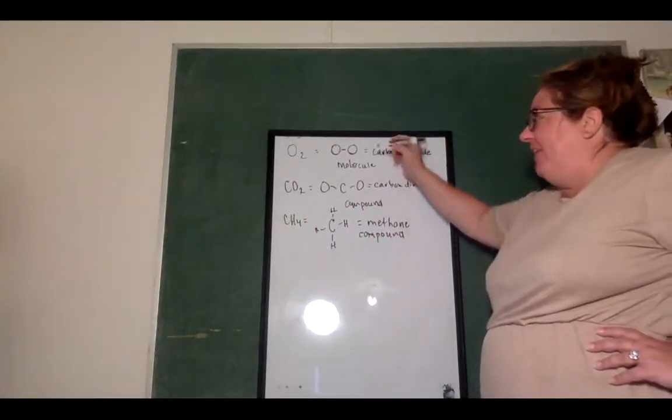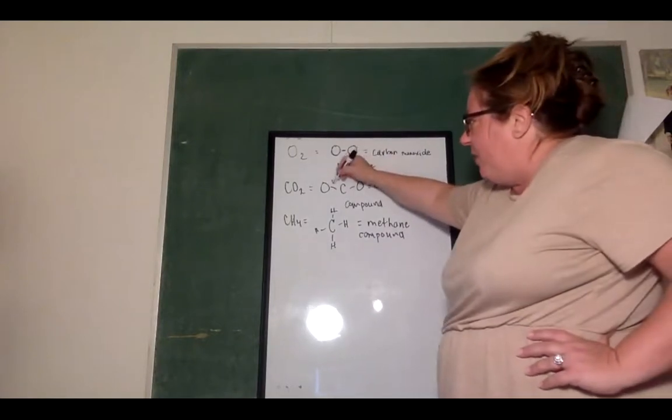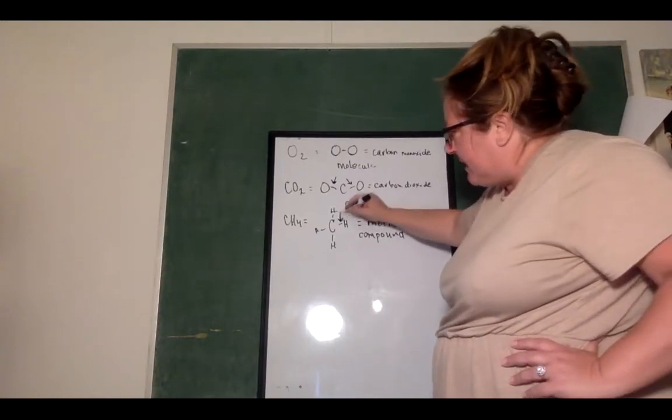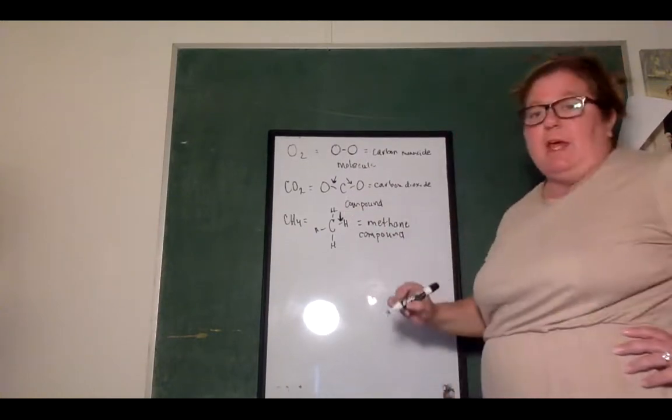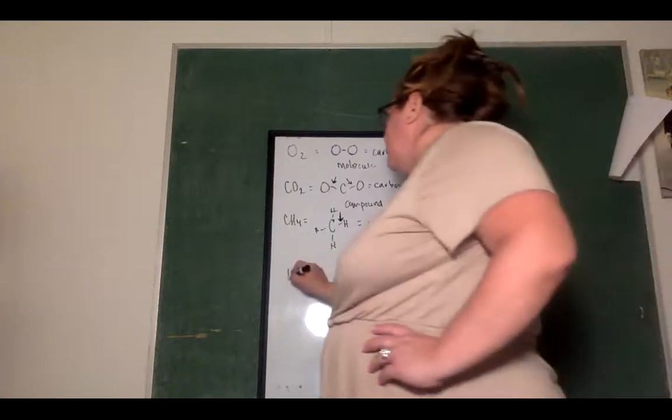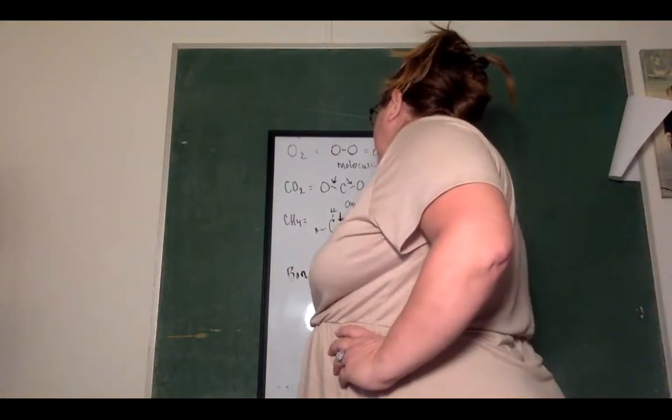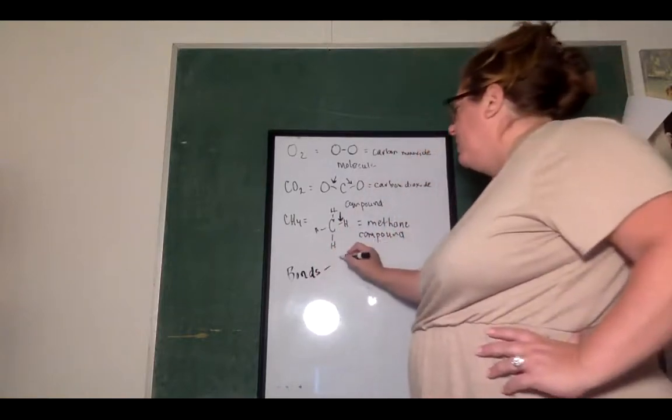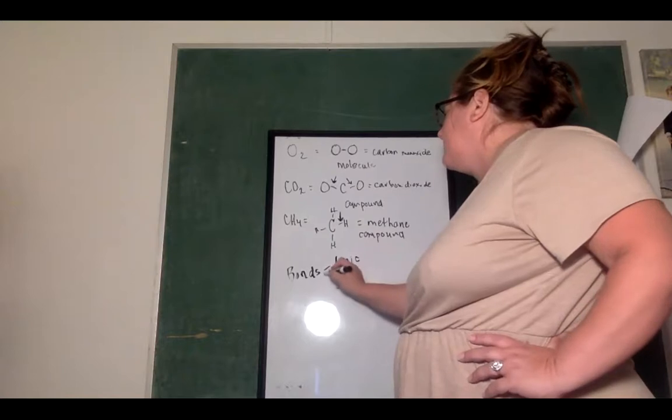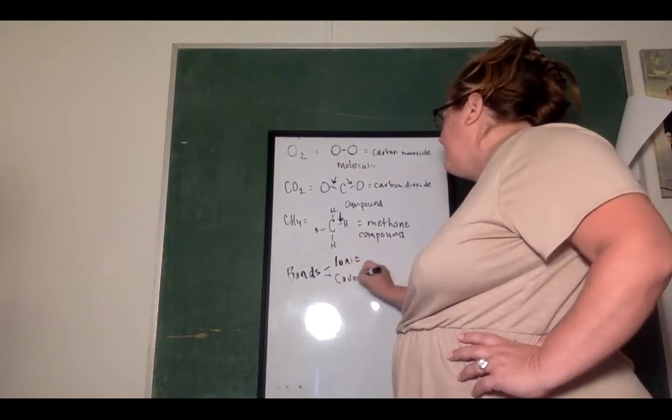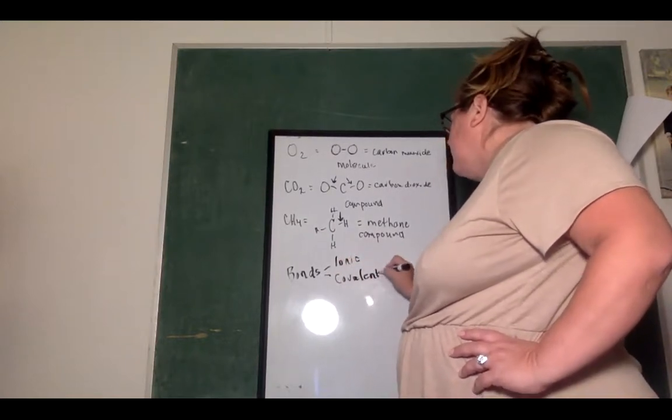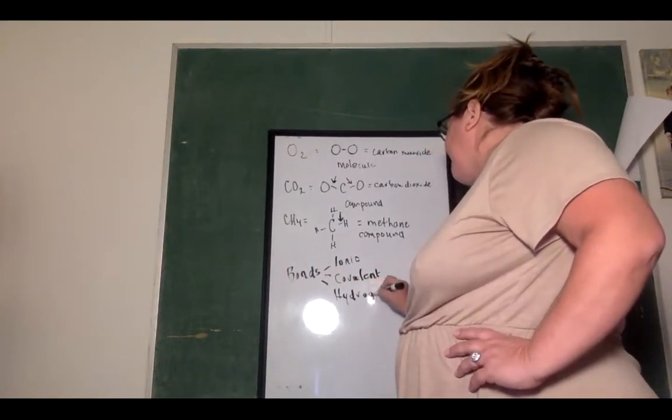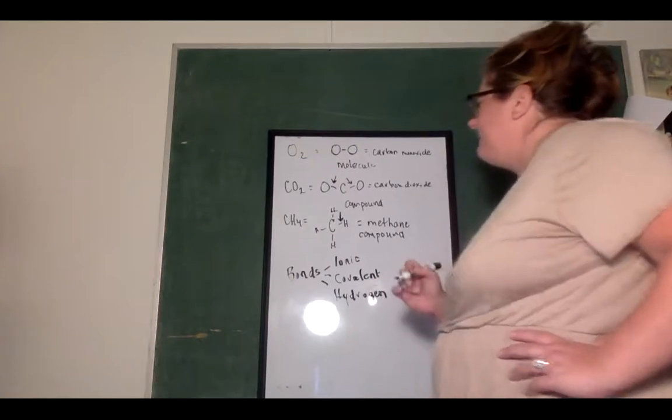So we want to investigate what are these, what are these lines here? What are these lines about? Those lines are the bonds. Those lines are the bonds, and we're going to study three types of bonds today. We're going to study ionic bonds, we're going to study covalent bonds, and we're going to study hydrogen bonds.